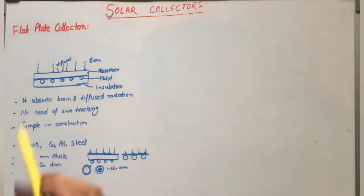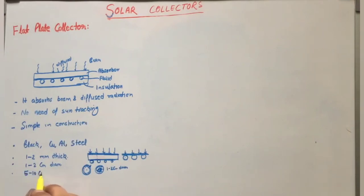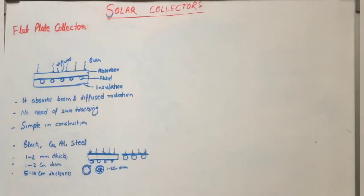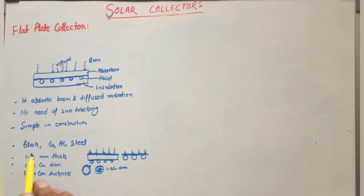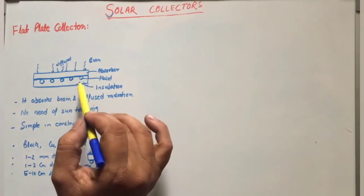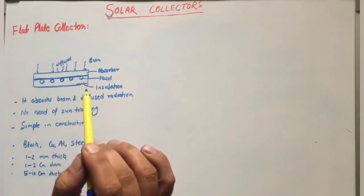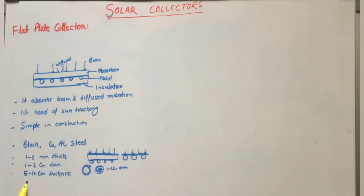The next component is insulation. The insulation thickness should be 5 to 10 centimeters. If it is more than that, there is no further advantage and it only increases cost. However, if it is less than this thickness, it may not be capable of insulating the heat and heat may be lost to the surroundings. So the optimum insulation thickness is 5 to 10 centimeters.